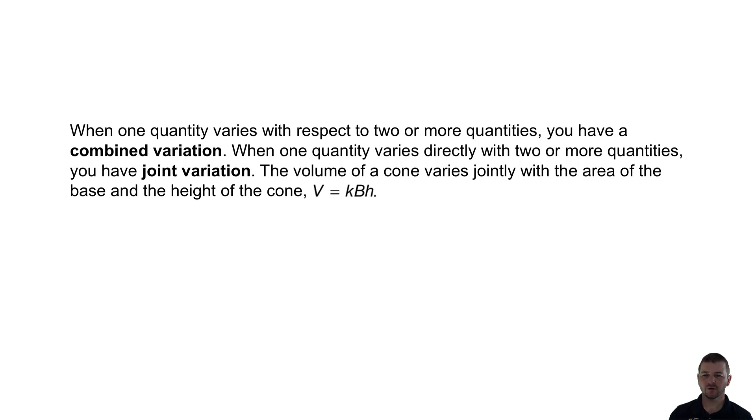The volume of a cone varies jointly with the area of the base and the height of the cone. V equals K times B times h, or volume equals K, the constant of variation, times the base, the area of the base B, times the height of the cone.